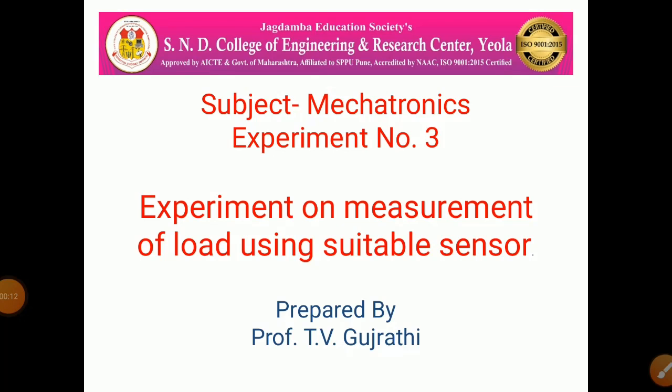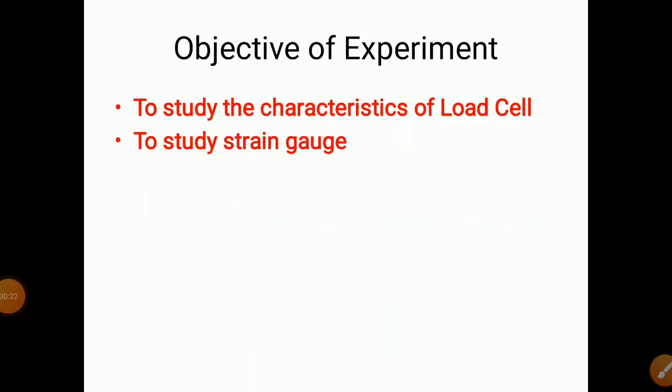The name of experiment is Experiment on Measurement of Load Using Suitable Sensor. The objective of the experiment is to study the characteristics of load cell and to study strain gauge. These two are related phenomena — we are going to study strain gauge as well as characteristics of load cell.